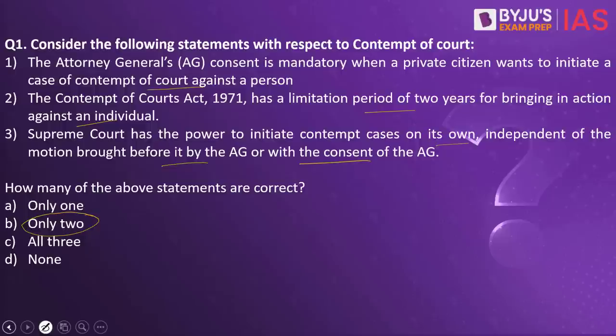Let's say the court has issued an order and asked a party to execute it, but this person does not execute. Another party or individual will complain that so-and-so has not executed the order. So can they file contempt of court proceedings directly? No. The issue will go before the Advocate General in case of a state, or the Attorney General in case of the center. If someone has violated and has contempt of court, it goes before the Attorney General.